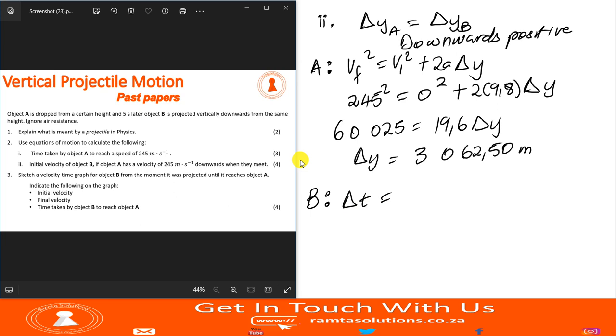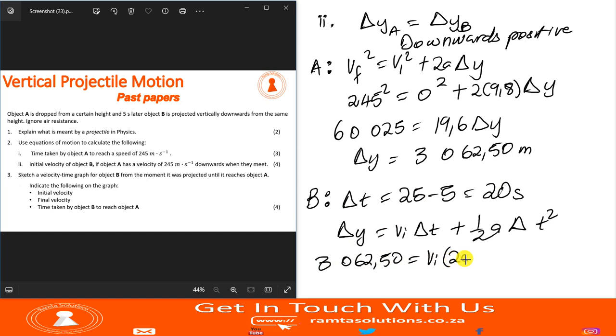The time taken here is, do you guys remember the time we calculated at number Roman figure one was 25 seconds. And the information says object B was released 5 seconds later. So delta T is basically 25 minus 5, which is 20 seconds. So we have the time. We also have the displacement. So we will say delta Y equals VI delta T plus half A delta T squared.